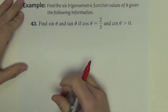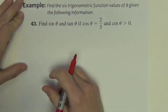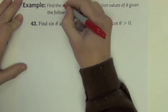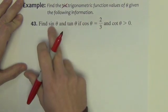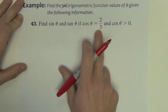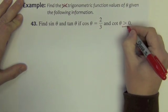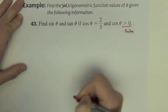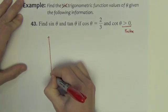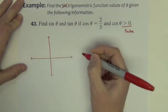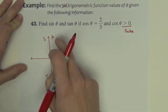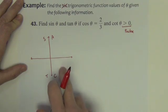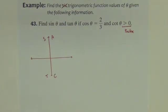Putting what we learned about the quadrants to use, let's solve this problem. We're going to find sine and tangent only, given that cosine is 2/3 and cotangent is positive. I'll begin with an xy axis labeled with All Students Take Calc. Now let's figure out where this angle lives. Cosine is positive — cosine can only be positive in quadrants 1 and 4. Of those two, cotangent is also positive, which rules out quadrant 4.